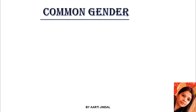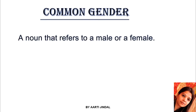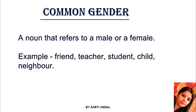Now let us move to the next type of gender, that is common gender. A noun that refers to either a male or a female — that is, it is common for both male and female. For example, friend — a friend can be male or female. Similarly, teacher can be male or female. Other examples include student, child, and neighbor. These all come under common gender.